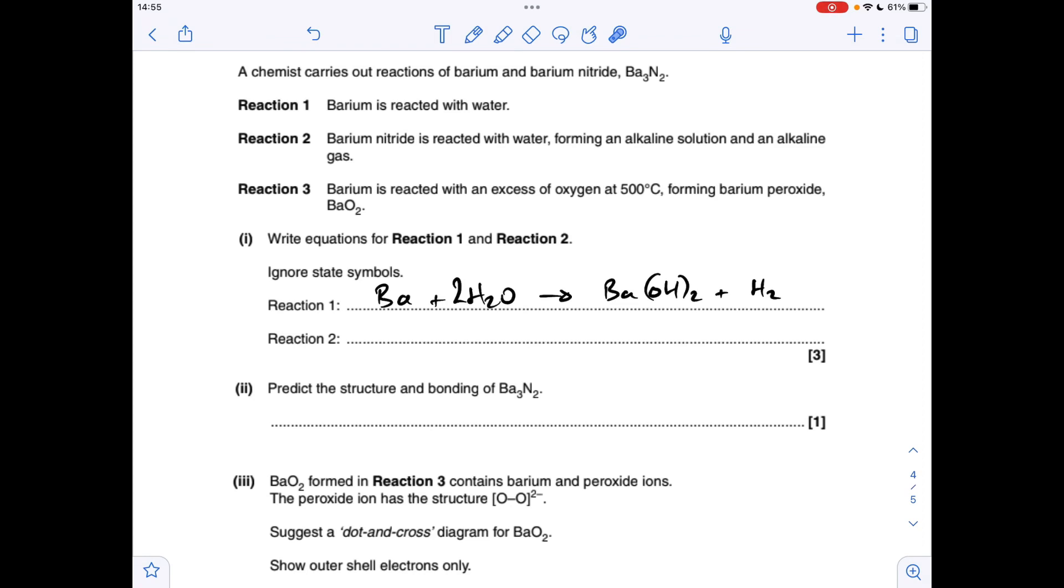Anyway, so next question, we've got to write the equations for the reaction between barium and water first. So barium and water makes barium hydroxide, which has that formula, and hydrogen.